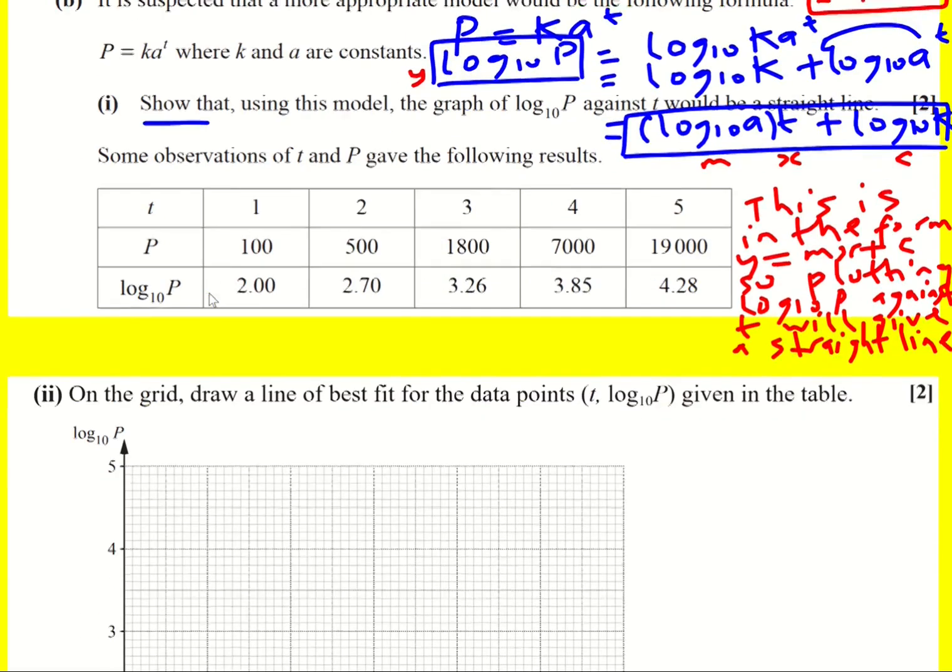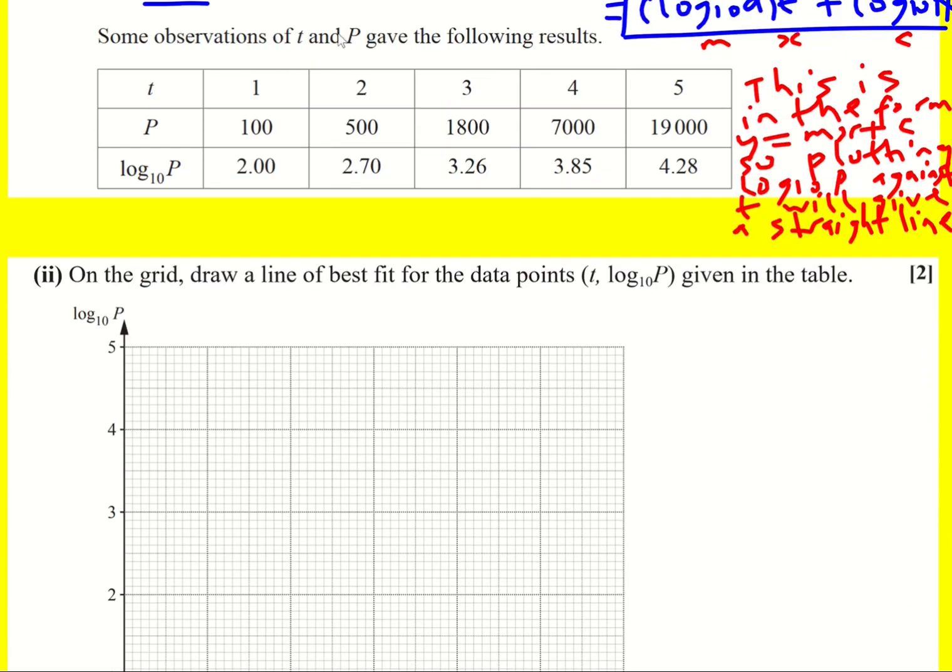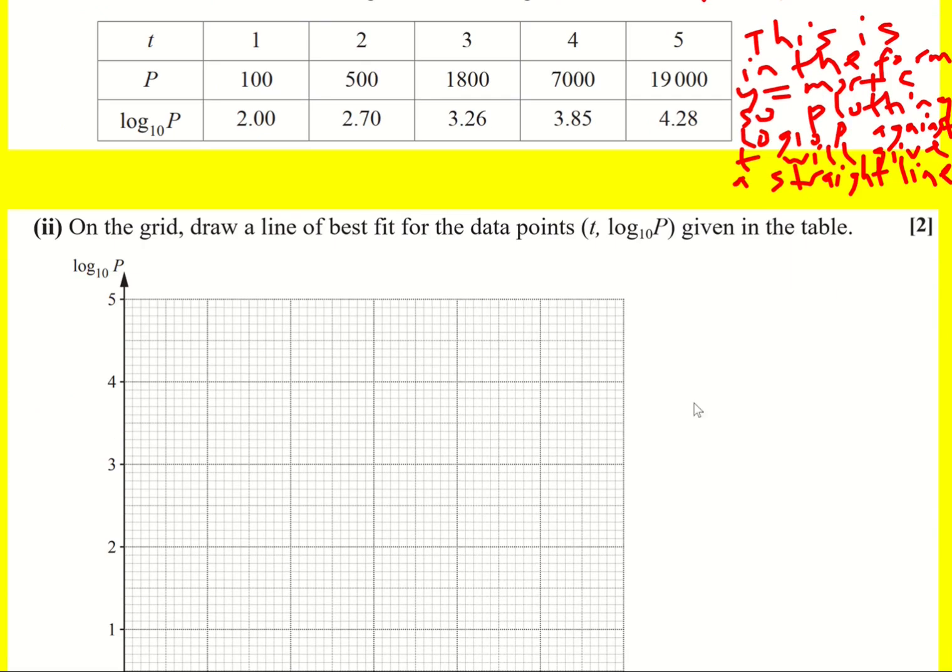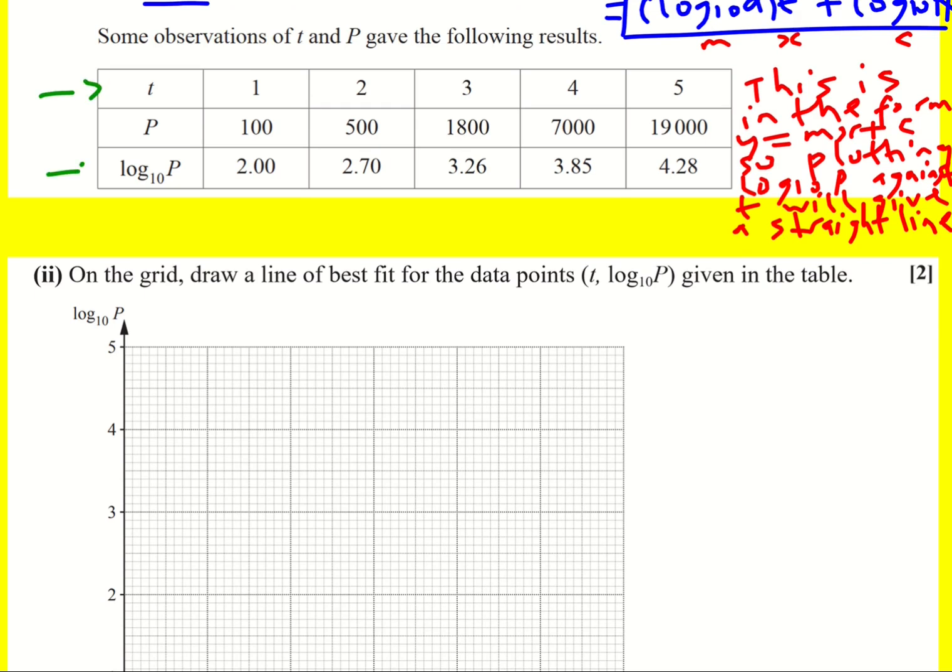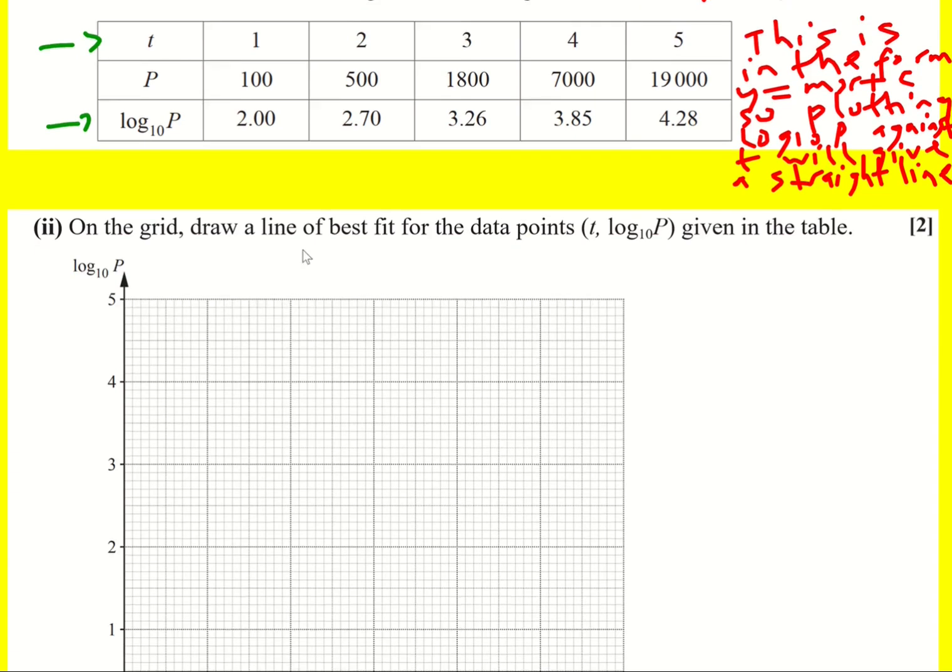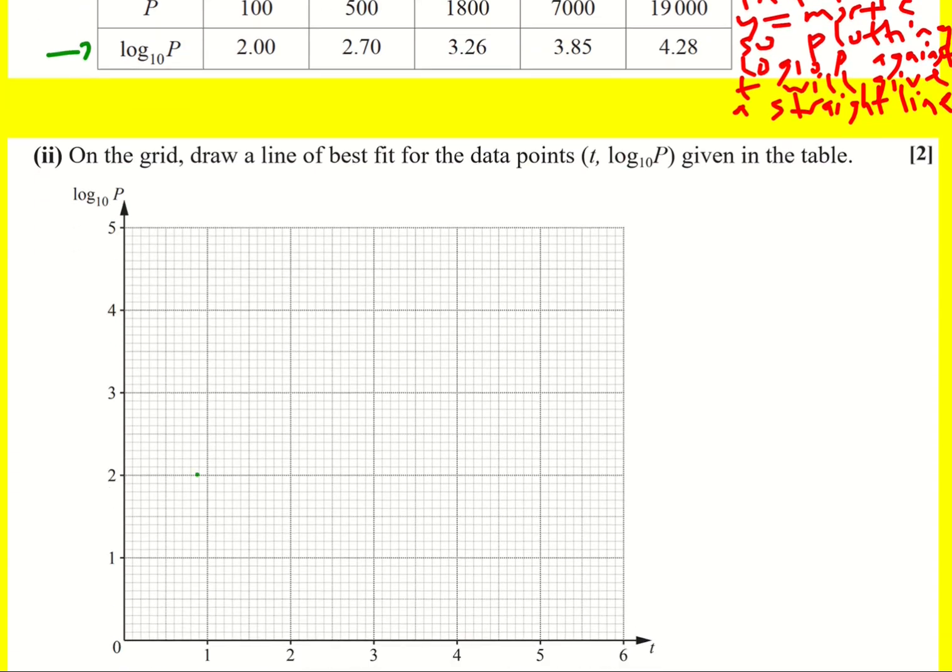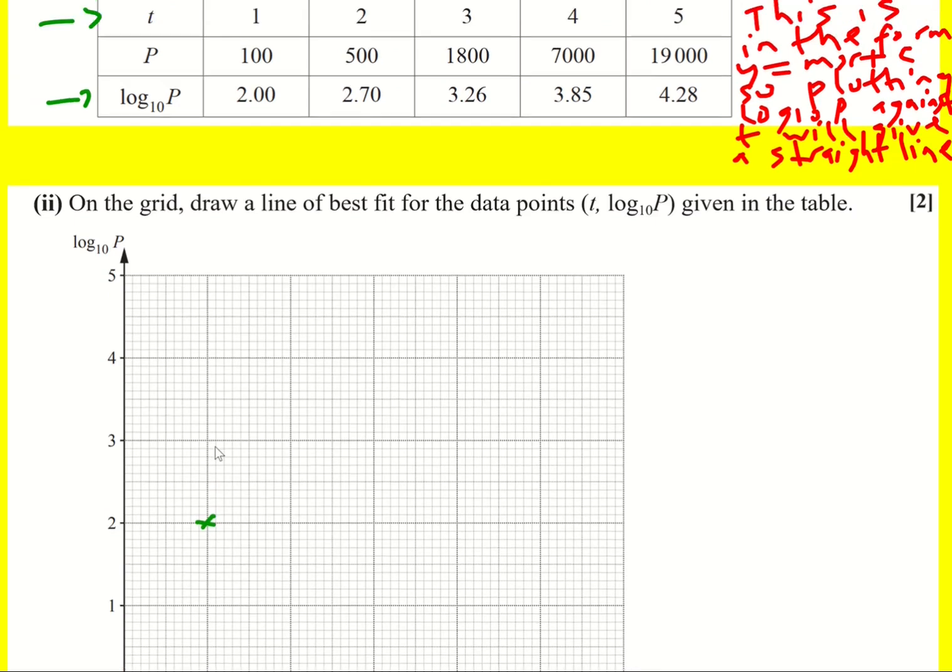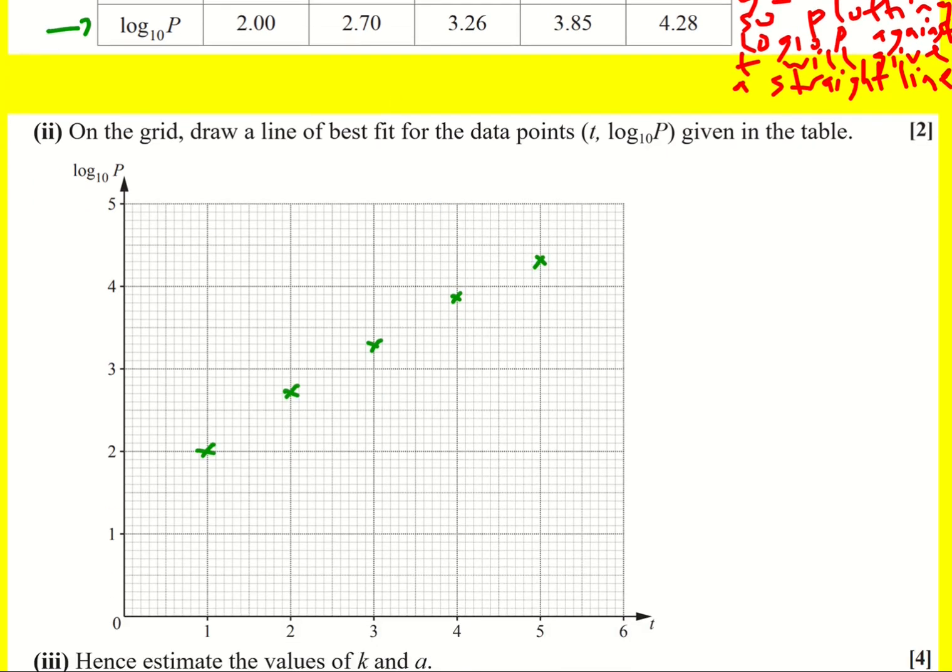Now we've got a table of results some observations of t and p and we're going to plot a line of best fit for the data plotting log p against t. So it's these two rows we're interested in. When t is 1 we get log p is 2, then 2 against 2.7, 3 and 3.26, 4 and 3.85, and 5 and 4.28. Okay that's pretty good.